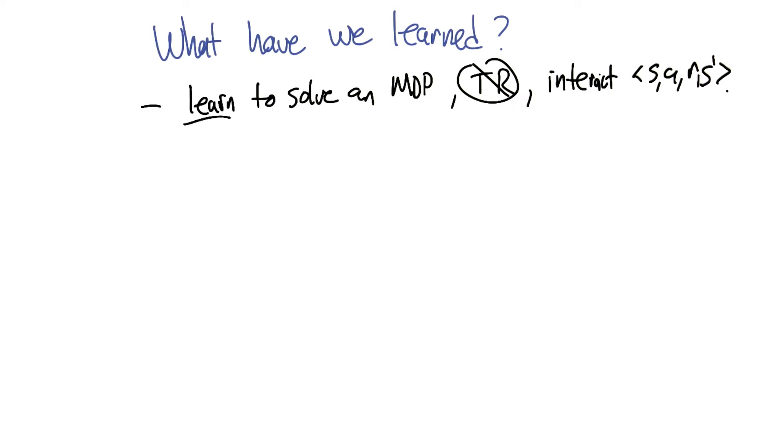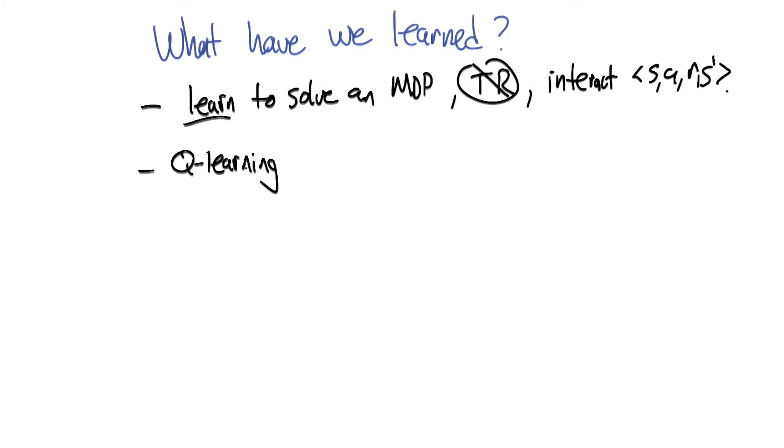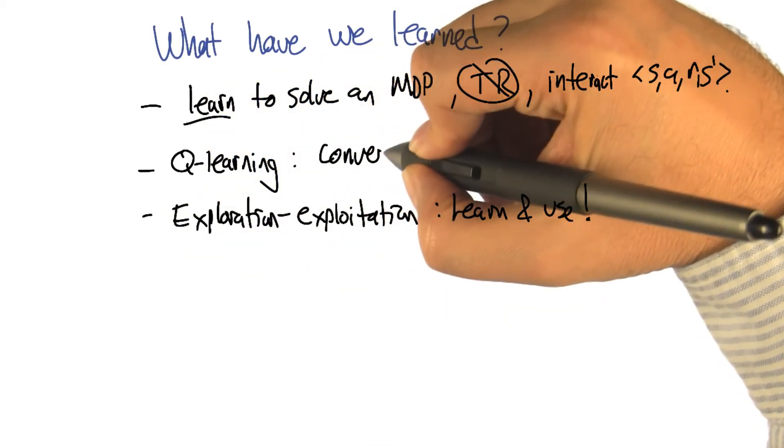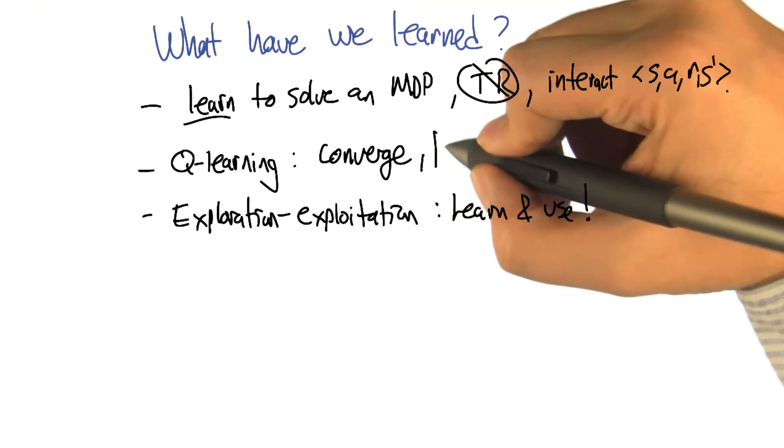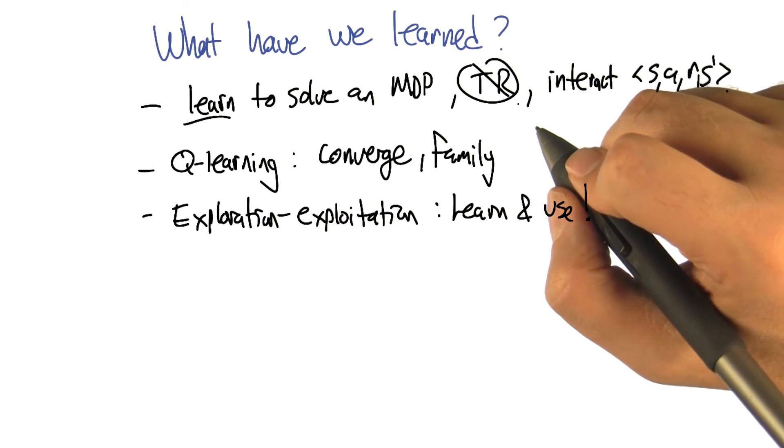We learned some specific things. In particular, we learned about Q-learning, several kinds of Q-learning. And I think the other most important thing that we learned about is the exploration versus exploitation tradeoff. And with Q-learning, we learned a little bit about when it converges, and that it's actually a family of algorithms and different members of that family have different behaviors associated with them.